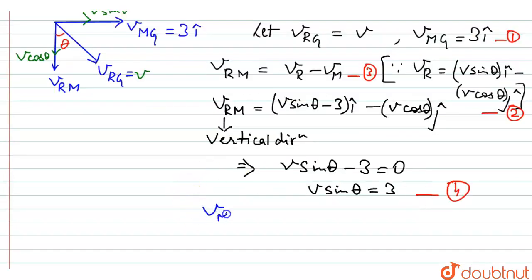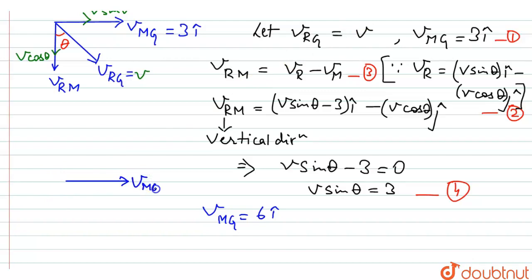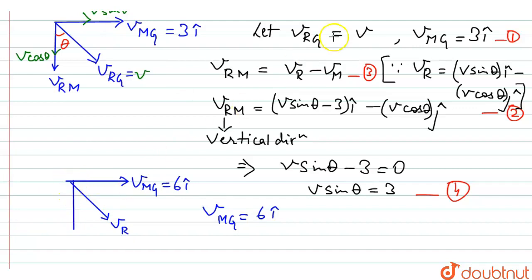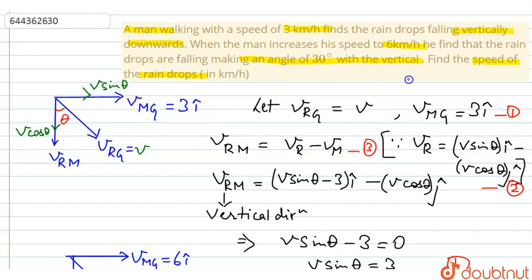Now for the second case, the velocity of the man has been increased to 6 kilometers per hour. So I can write the new velocity of man with respect to the ground as 6 i-cap. The velocity of rain is making an angle of 30 degrees with the vertical, as seen with respect to the man.